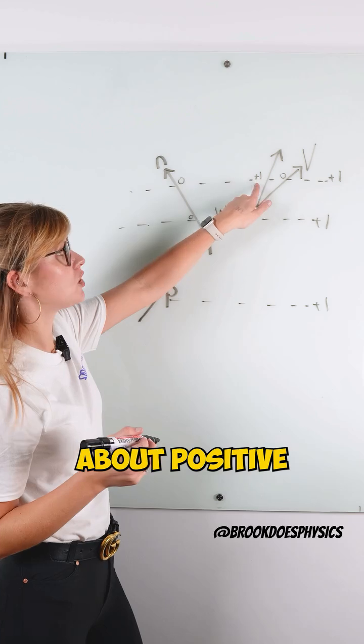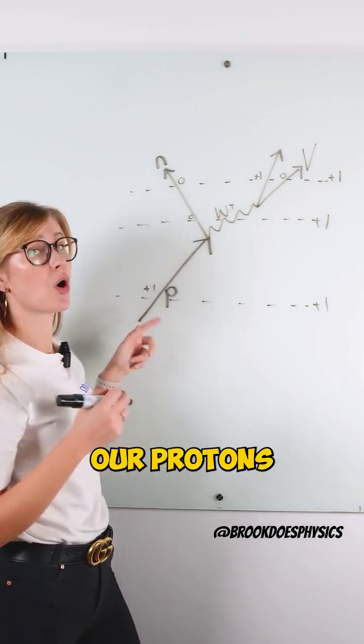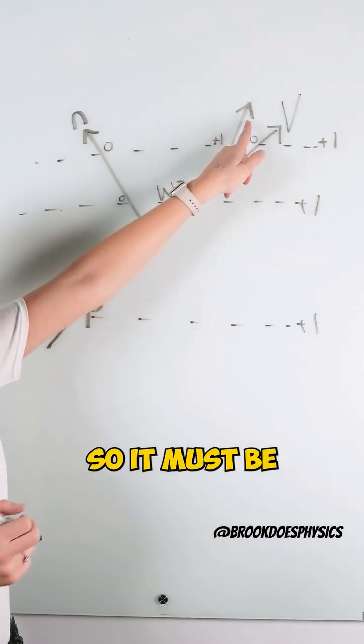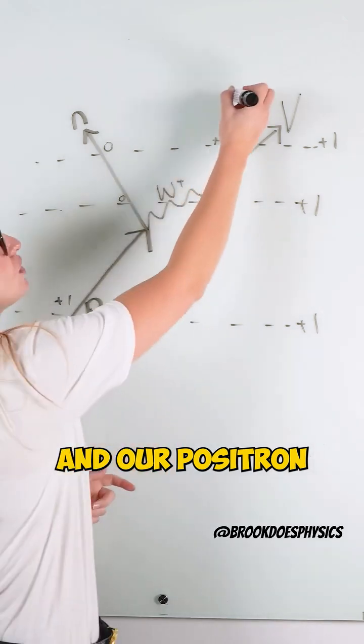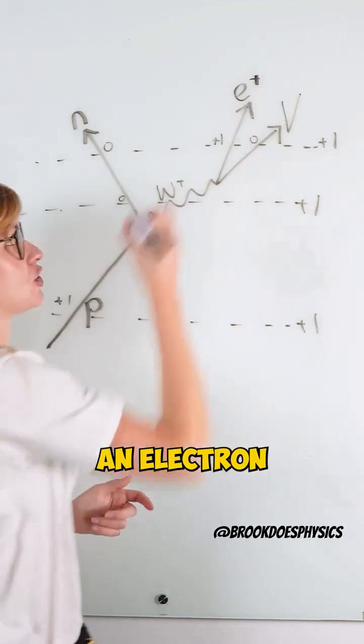The other things we know, anything about positive charge, is just our protons, but we already have a proton, so it must be our positron, and our positron is the antiparticle of an electron.